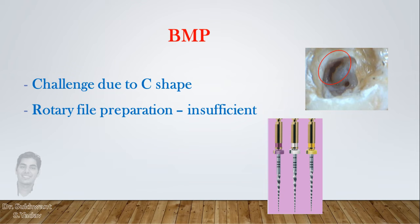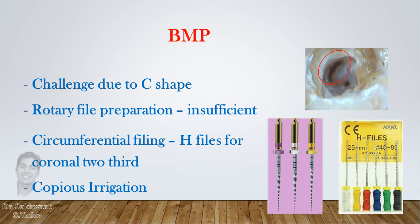If you encounter a surprise C-shaped canal orifice, biomechanical preparation becomes a challenge, especially in single canal or two-canal patterns where canals are fused. Preparing a C-shaped canal with round rotary files is quite impossible. The apex of a wide C-shaped canal is usually round or oval and can be prepared with large-size rotary files, but the coronal two-thirds becomes a challenge. You can use H-files to do circumferential filing to clean this part of the canal. Copious irrigation is always helpful because where your files cannot reach, irrigation can reach.